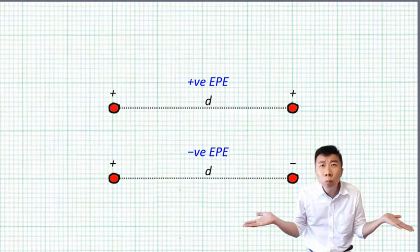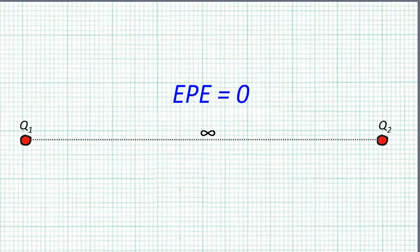Interestingly, the energy stored is positive for like charges but negative for unlike charges. Why? First of all, EPE is defined to be zero when two charges are at infinite distance apart. This is the same whether they are like or unlike charges.